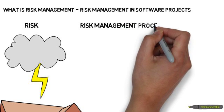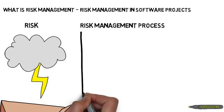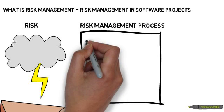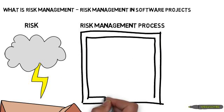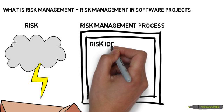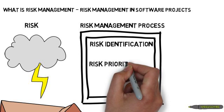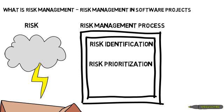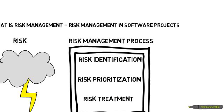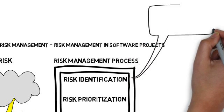Risk arises from a variety of perspectives like project failure, safety, security, legal liabilities, and so on. The risk management process has three steps: the first step is risk identification, the next step is risk prioritization, and the last step is risk treatment.